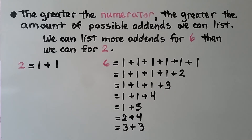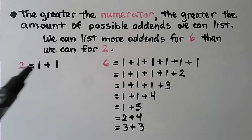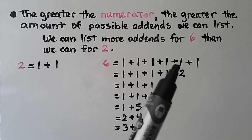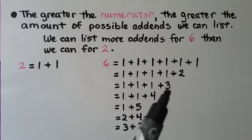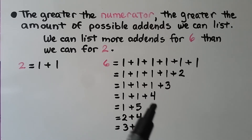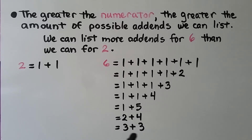The greater the numerator, the greater the amount of possible addends we can list. We can list more addends for 6 than we can for 2. For 2, we can only write 1 plus 1. For 6, we could write 6 ones as the addends, or 4 ones and a 2, or 3 ones and a 3, or 2 ones and a 4, or a 1 and a 5, or a 2 and a 4, or a 3 plus 3. A lot more addends for 6 than there are for 2.